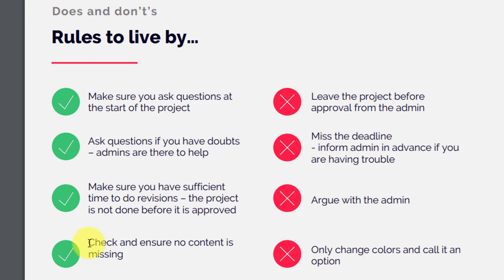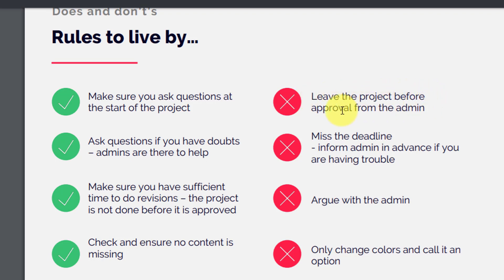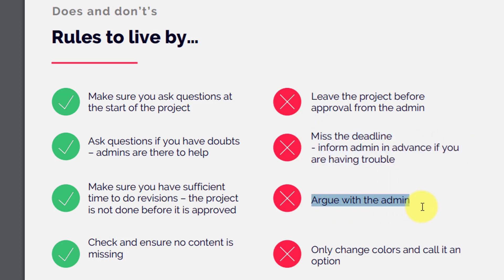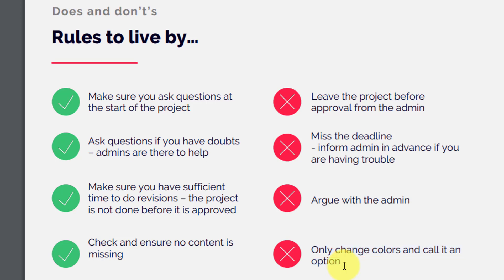The don'ts: do not leave the project before it's approved by the admin — wait for feedback and approval. Do not miss a deadline; if you're having trouble, inform the admin in advance. Do not argue with the admin. And do not just change colors and call it a different version — there should be meaningful changes beyond color swaps. These are the dos and don'ts while working on live projects on nomoreplatform.com.